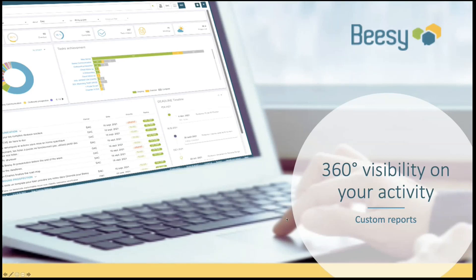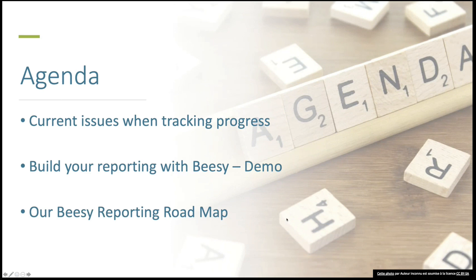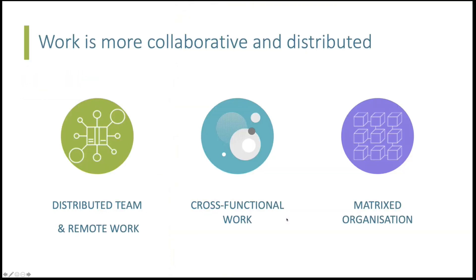So this is what we're trying to do — how do you get 360 degrees of visibility on your activity using busy reports? Because busy is about adding tasks, creating notes, and managing task lists. But now we have a very powerful dashboard available in the system. We built it to give you 360-degree visibility in your activity, and that's what I'm going to show today. I'll start with current issues we've seen when tracking progress, then show how you can build reporting using busy — a demo — and then a few examples of what we're going to do in our roadmap over the coming three months.